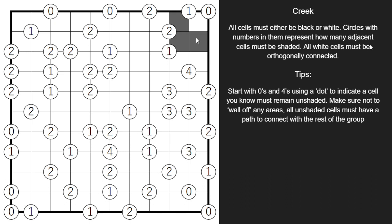So you wouldn't be able to have something like this where a white cell is isolated. And that's it for the rules. What I'm going to go ahead and do is try to solve this example puzzle for you guys and share some common tips and tricks along the way that will hopefully make it easier for you to solve this type of puzzle yourself in the future.